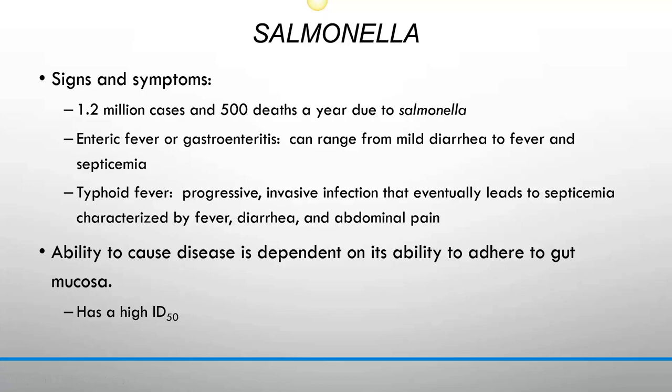Salmonella: 1.2 million cases and 500 deaths per year. It causes enteric fever and can also cause gastroenteritis. Symptoms range from mild diarrhea to fever and septicemia depending on where the microorganism travels. If it stays in the digestive tract, you mainly get gastroenteritis — fever, diarrhea, vomiting, possibly blood in stool. If the microorganism gets into the blood and replicates there, you develop typhoid fever — a progressive invasive infection eventually leading to septicemia characterized by fever, diarrhea, and abdominal pain.